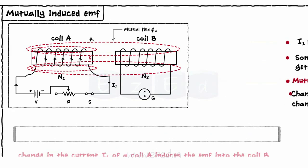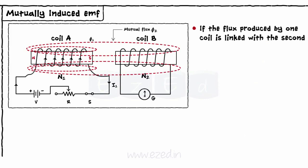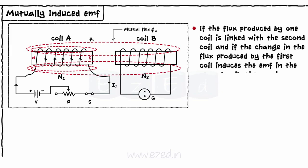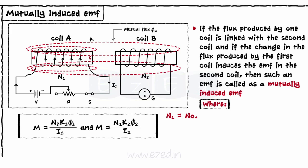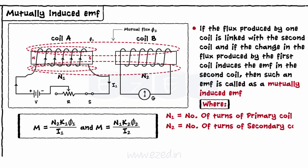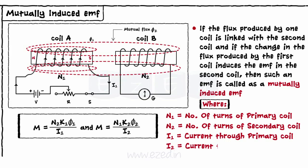This phenomenon is called as the mutually induced EMF. It is defined as: if the flux produced by one coil is linked with the second coil and if the change in the flux produced by the first coil induces the EMF in the second coil, then such EMF is called as mutually induced EMF. The coefficient of mutual inductance is given by the formula shown, where N1 equals number of turns of primary coil, N2 equals number of turns of secondary coil, I1 equals current through primary coil, and I2 equals current through secondary coil.